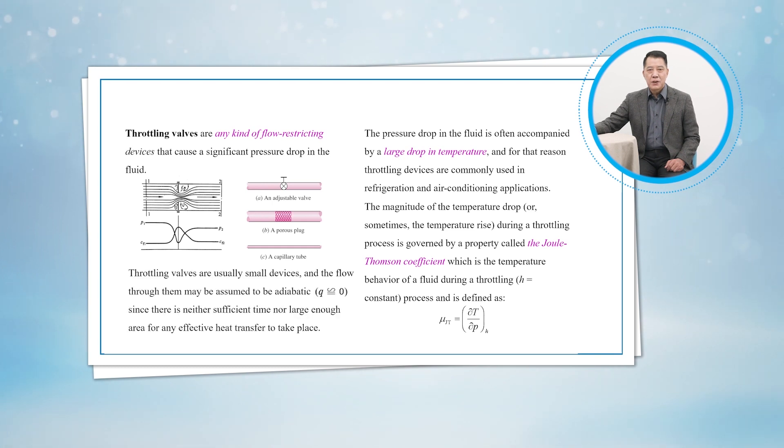Throttling valves are usually small devices, and the flow through them may be assumed to be adiabatic, since there is neither sufficient time nor large enough area for any effective heat transfer to take place.